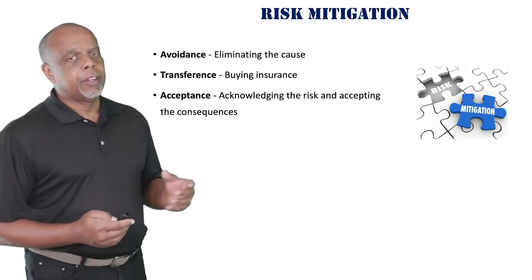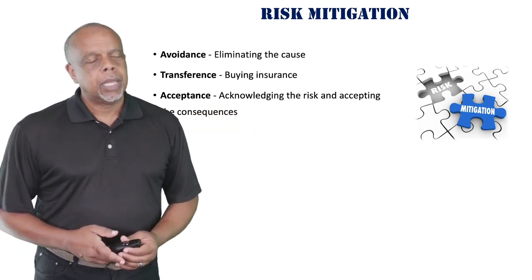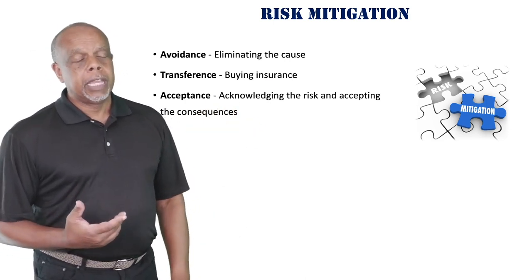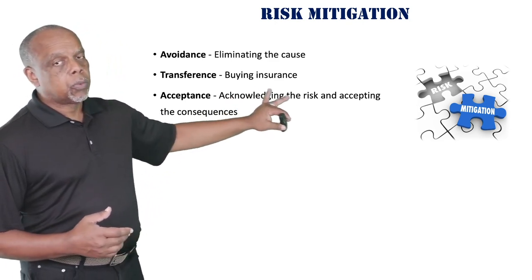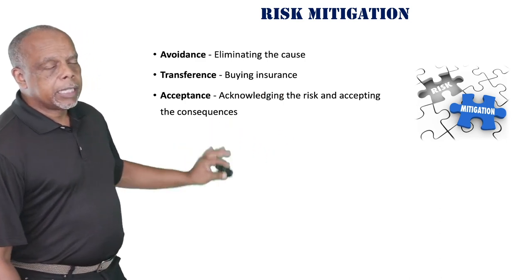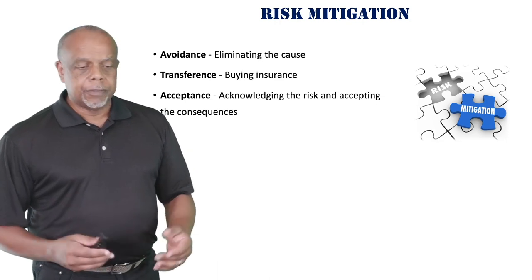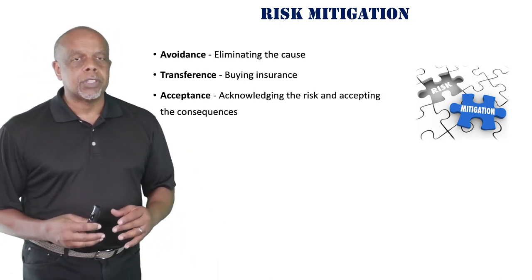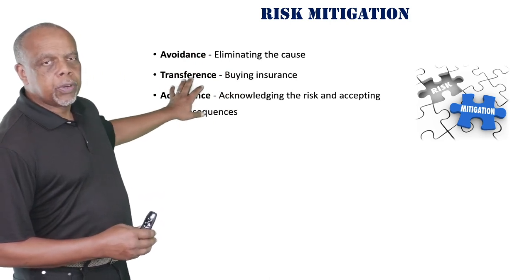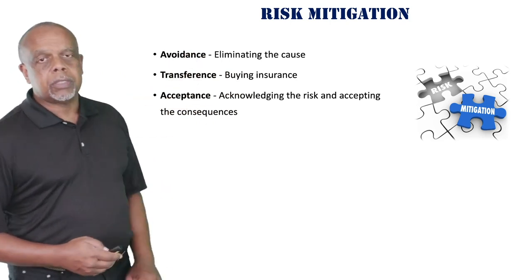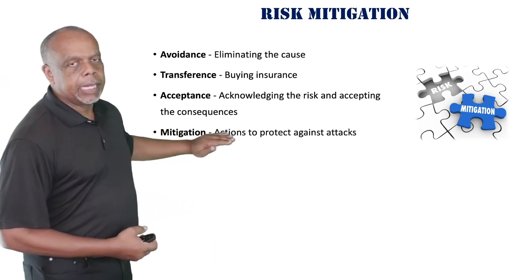Another option is to simply accept the risk. That means I park on the street every day and go to bed hoping nobody breaks into my car. I'm acknowledging the risk exists and accepting the consequences — I only put liability on my car, no comprehensive coverage. That is how I just accept the risk: I can't afford to transfer it, but I still can't afford to avoid it altogether.